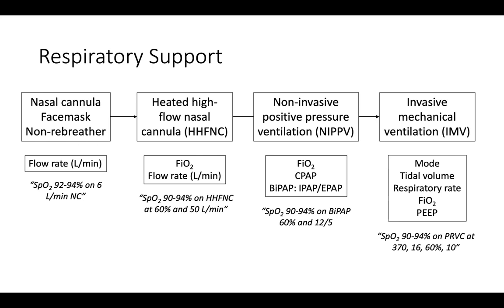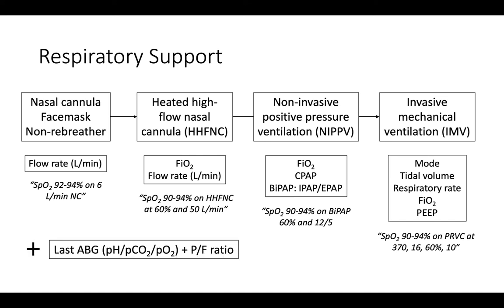After reporting the type of respiratory support and current settings, report the last ABG. When reporting an ABG, first report the pH, then the PCO2, and then the PO2. If relevant — for instance if a patient has ARDS — report the P to F ratio as well. This ratio is calculated by dividing the PO2 by the FiO2 as a decimal; for example, an FiO2 of 90% is 0.9. For example: ABG at 0700 on these settings shows 7.32, 38, 74, plus P to F ratio of 220.